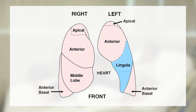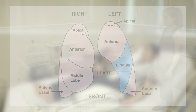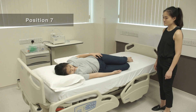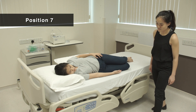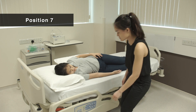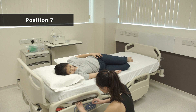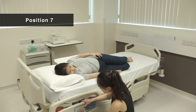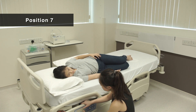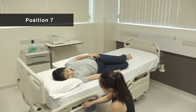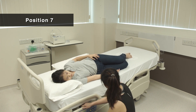Position 7 is for secretion at the middle left lungs. Lie on the right side with knees bent. Place one pillow behind the back. Rotate the body slightly backwards. Elevate the foot of the bed 15 degrees.